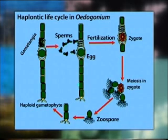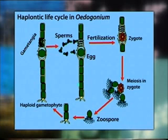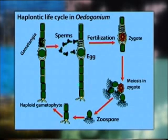Then the sperms are released from the antheridium and they swim in the water, ultimately coming closer to the oogonium and getting inserted into it. When they fertilize the egg, they form a zygote. The zygote is then liberated from the oogonium, settles down, and ultimately undergoes meiosis and forms haploid cells which give rise to the haploid gametophytic phase once again. This is how Oedogonium completes the life cycle and exemplifies the haplontic type of life cycle.